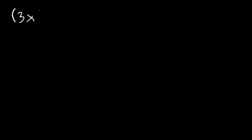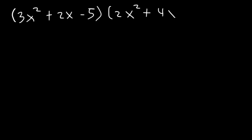Now, what about multiplying a trinomial — 3x squared plus 2x minus 5 — by another trinomial — 2x squared plus 4x plus 3? What do you think is going to happen? Well, initially we have 3 terms. 3 times 3 is 9. So we should get a total of 9 terms before we combine like terms.